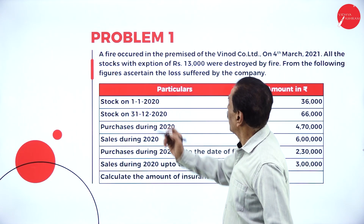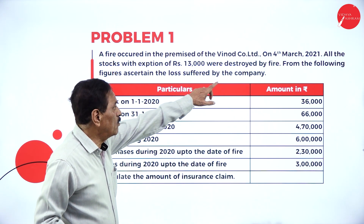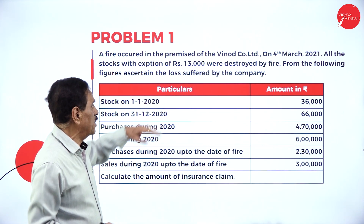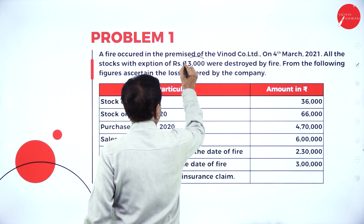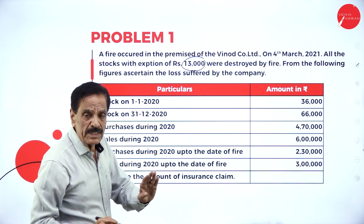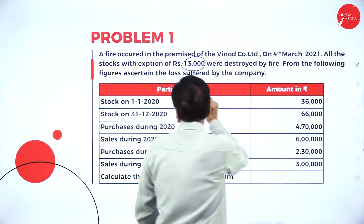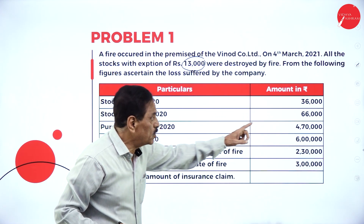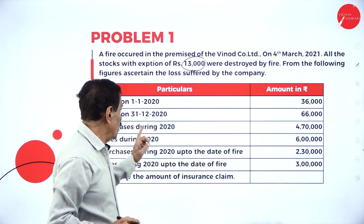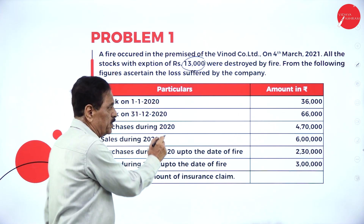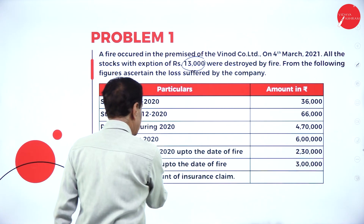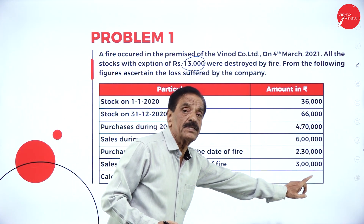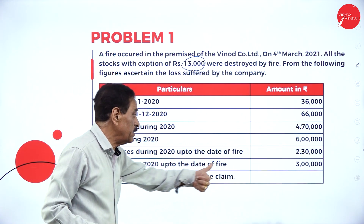A fire occurred in the premises of a company on 4th March 2021. All stocks, with the exception of Rs. 13,000, were destroyed by fire. From the following figures, ascertain the loss suffered: stock on 1st January 2020 was Rs. 36,000; stock on 31st December was Rs. 66,000; purchases during the year Rs. 4,70,000; sales during the year Rs. 6,00,000; purchases up to the date of fire Rs. 2,30,000; sales up to date of fire Rs. 3,00,000.